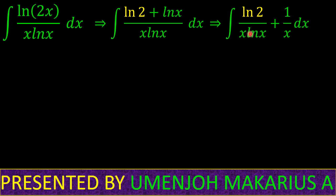1 over x. At this point we can integrate term-wise. If we integrate 1 over x, we get natural log of x. So the integral of ln 2 over x ln x dx stays the same, then integrating 1 over x we have natural